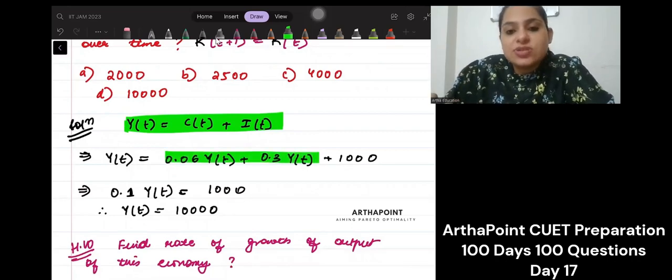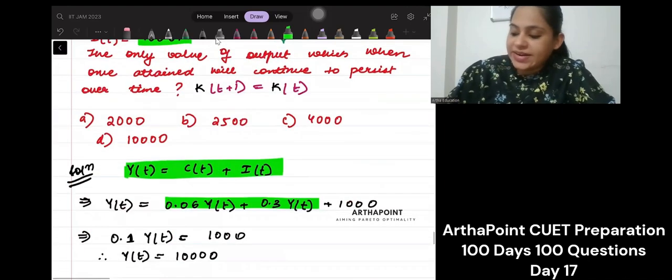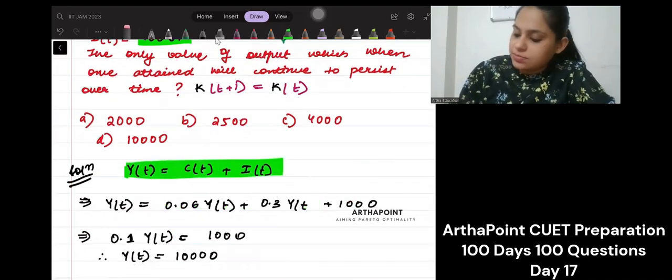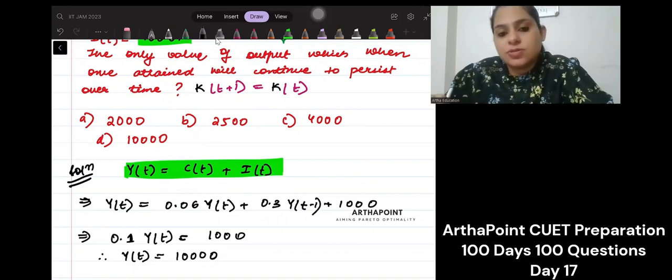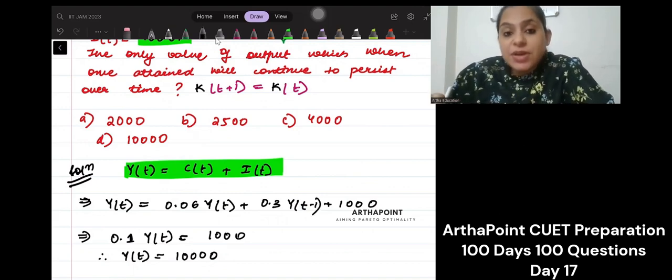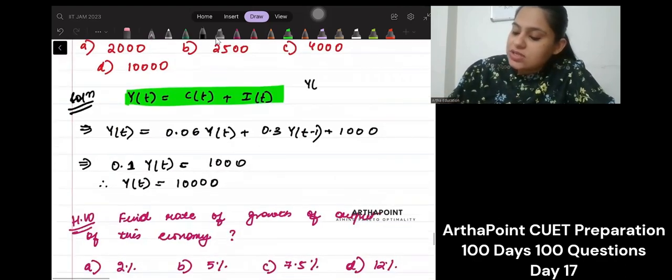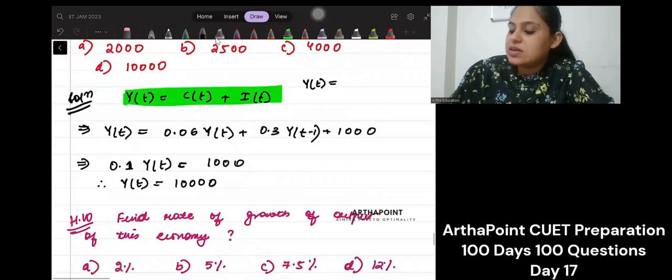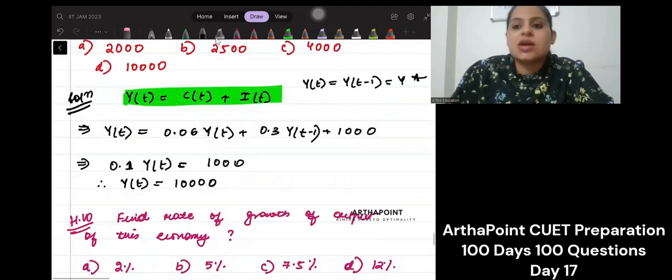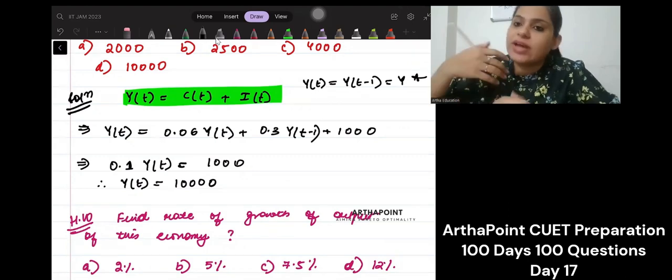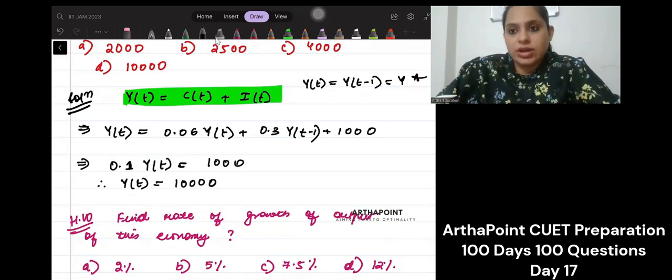0.06Y(t) plus 0.3Y(t-1). Here it is Y(t-1) plus 1000. But because we want the same level of output to persist, what you can do is you can assume that Y(t) is equal to Y(t-1). Actually, consider Y star something for easy. So you don't have to be dependent on time. Now, there is no concept of time.